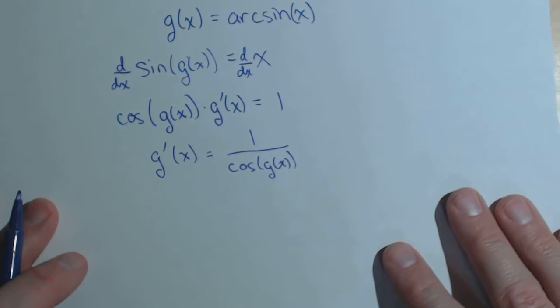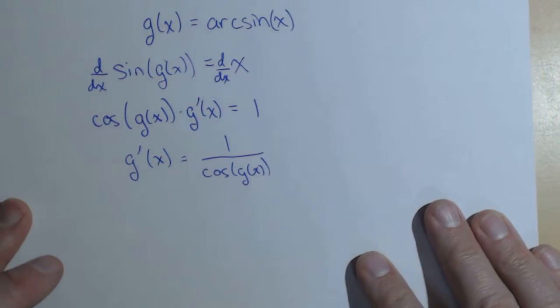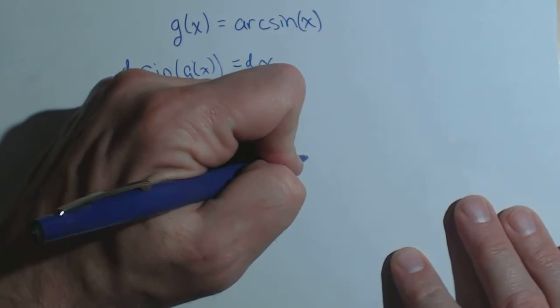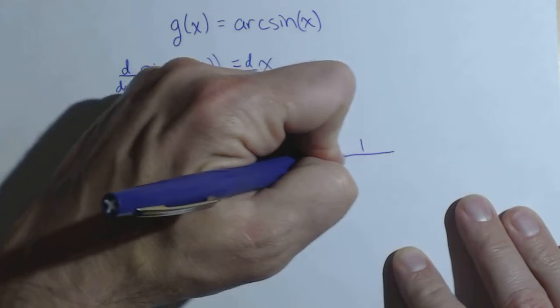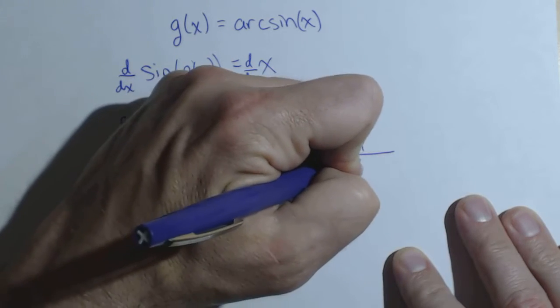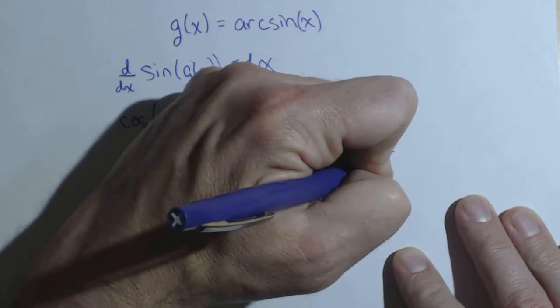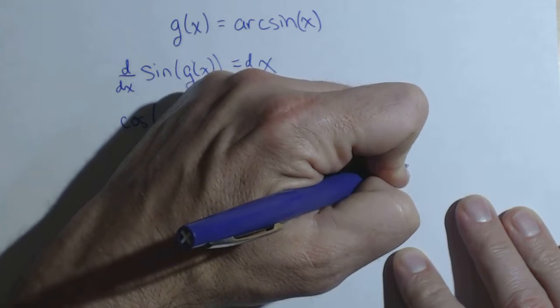All right, well that's nice, but we're going to actually put this in a nicer form. Recall that g of x is our original function, arc sine of x. So this is one over cosine of the arc sine of x.